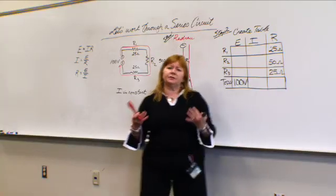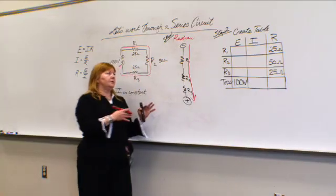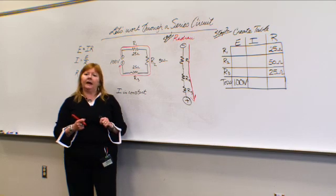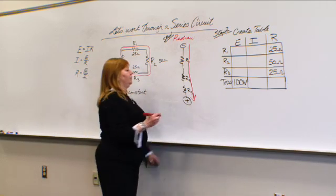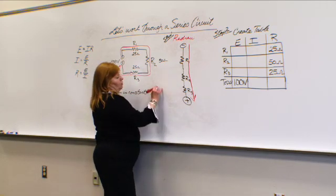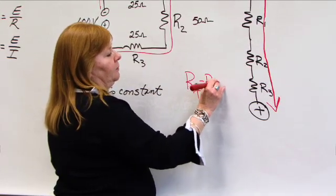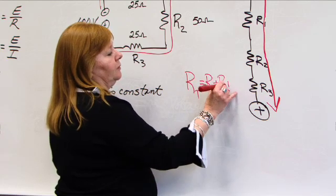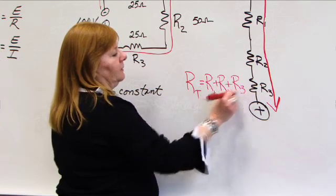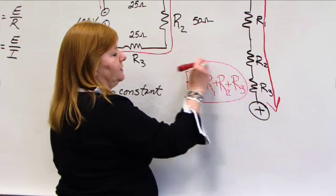Now, resistance total in a series circuit adds up. So if you remember, I can figure out total resistance by adding up R1 plus R2 plus R3. This is where we're going to start. And our table helped us think like this.